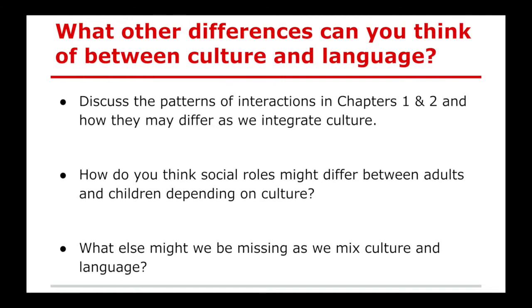We started talking about this in class, looking at what changes when we integrate culture. A lot of you said that everything changes. The second question was whether there are different roles, attitudes, aptitudes, or a different social contract when we move from children to adults or adults to children. And lastly, what are we missing as we start talking about culture and language? We need to sit down and think about what we might be missing, because we're always missing something and shouldn't assume we have the only perspective.